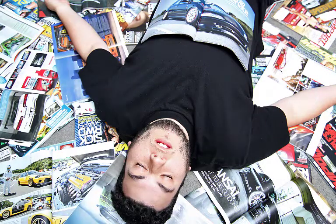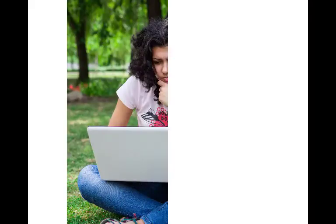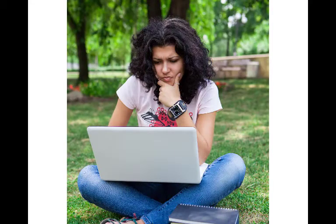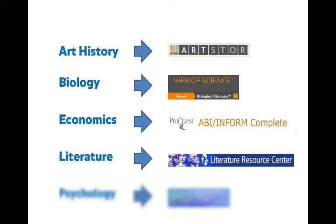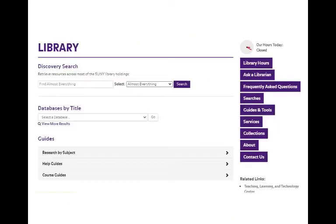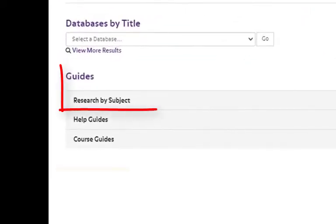Sometimes Discovery Search might give you too many results, or results that aren't specific enough. As you deepen your research, you will want articles that are specific to your topic. Individual subject databases are tailored to specific disciplines, such as art history, biology, economics, literature, psychology, and others.